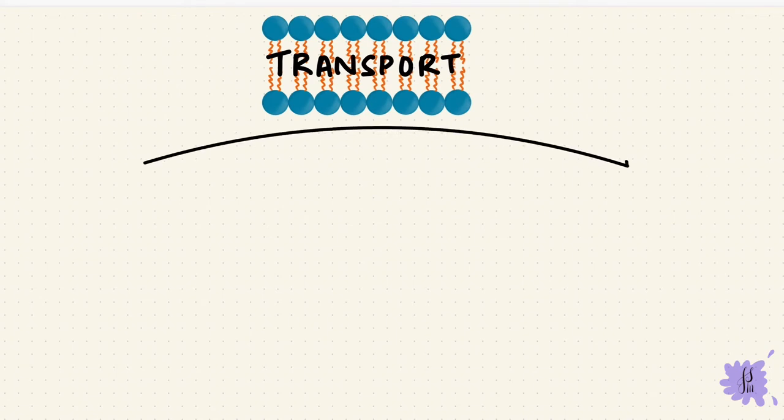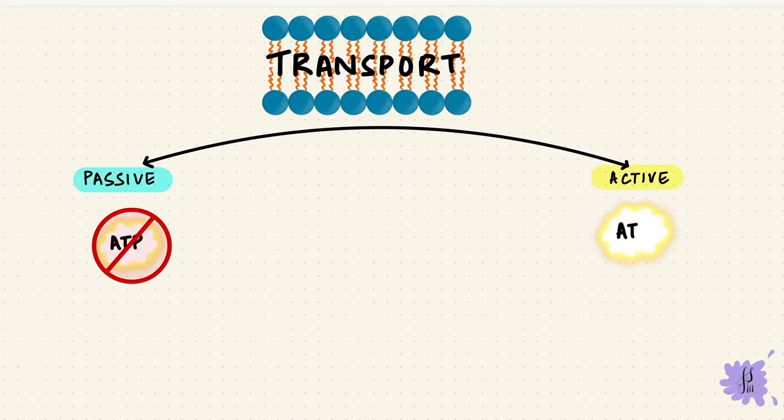Transport across the cell membrane can happen in two ways: passive or active transport. Passive transport means it doesn't need extra metabolic energy like ATP, while active transport needs ATP.